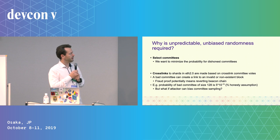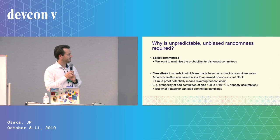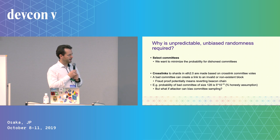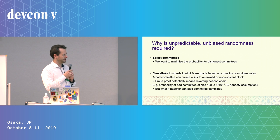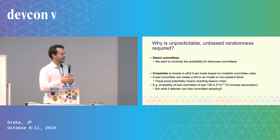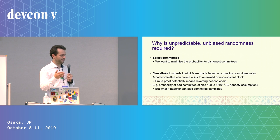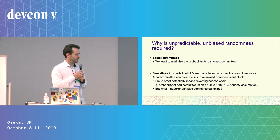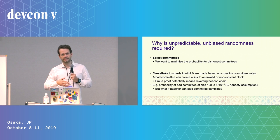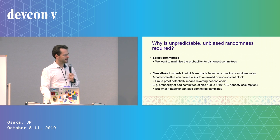A bit further on committees — why it is so important: we want to minimize the probability of having a dishonest committee. A bad committee could potentially create a link to an invalid or non-existent block, and a fraud proof would mean you have to revert the state of the beacon chain to when that happened. With a committee size of 128, the probability is quite small — 5 times 10 to the minus 15 — but this can completely change as soon as someone can bias the randomness being used.